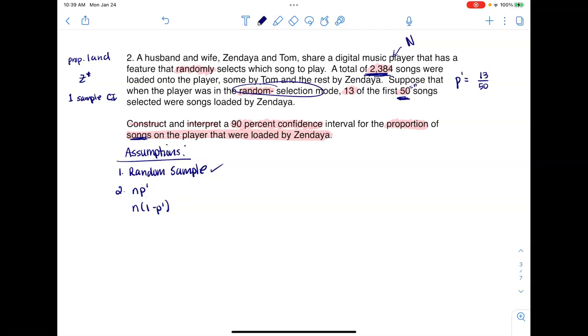The next thing I need to check is that NP prime and N times one minus P prime are greater than or equal to 10. And this is so that I have at least 10 successes and 10 failures happening. So let's take a look at P prime. I need to figure out from my sample how many songs were loaded by Zendaya. They said that I had 50 songs in the sample. You might be saying, what about this 2,384? That's the population size that we would call capital N. This is the sample size.